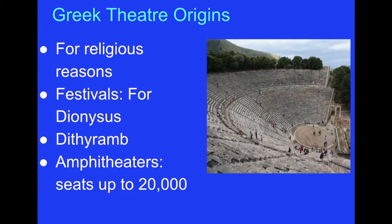Eventually it evolved into what we call the amphitheaters. The amphitheater is outdoors and can seat up to 20,000 people. It was really important in Greek society that you participated in religious things, which included going to the theater. That's why amphitheaters were so big — because you wanted to fit your whole city-state into one.